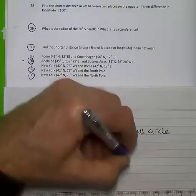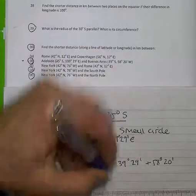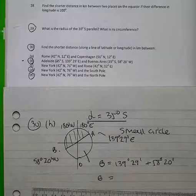139 degrees 29 minutes plus 58 degrees 20 minutes. And that would be 197